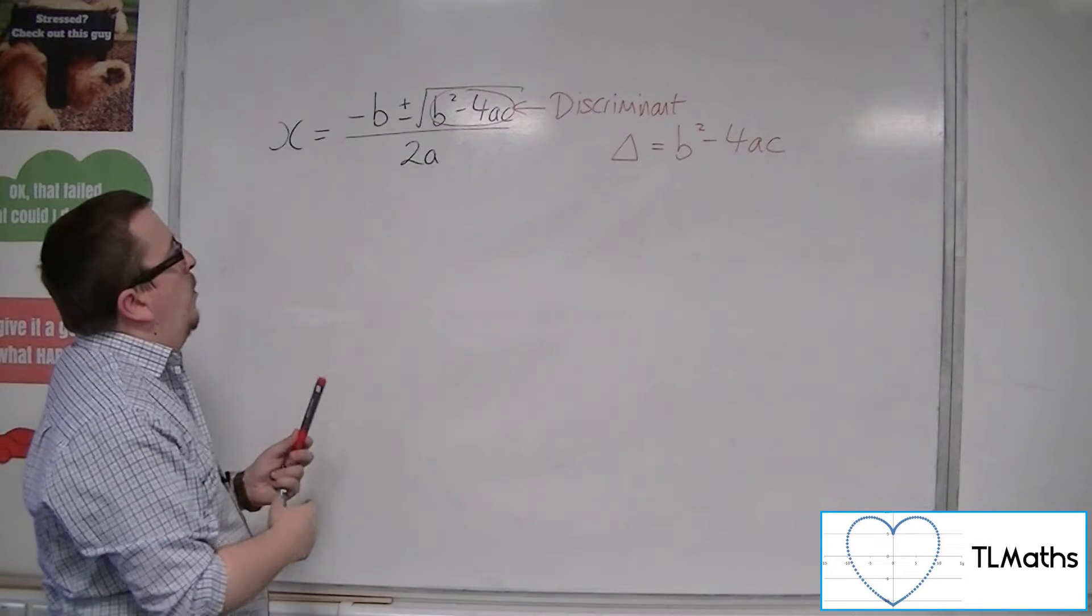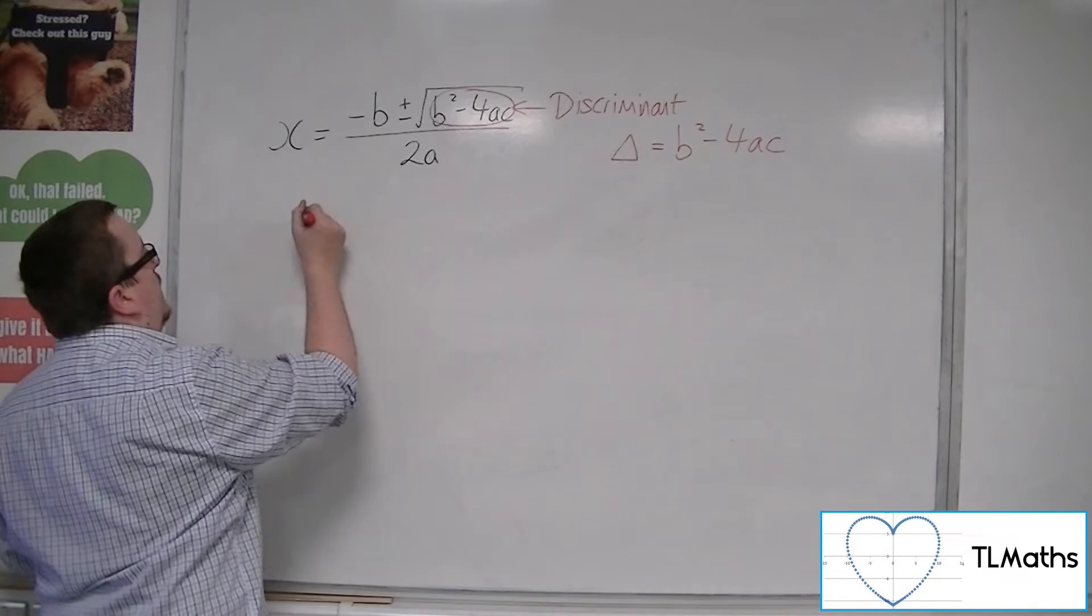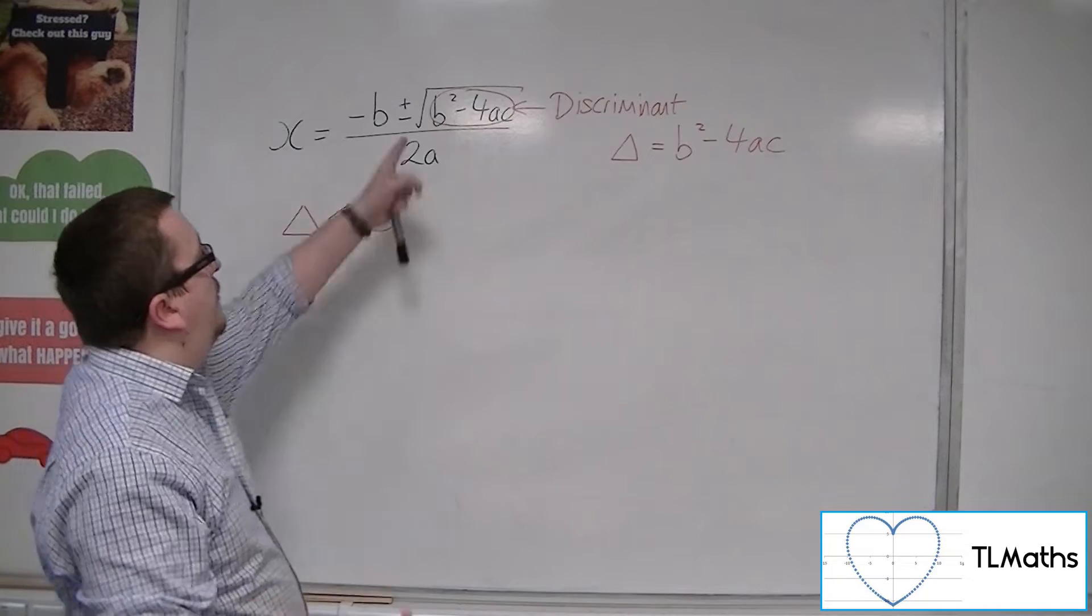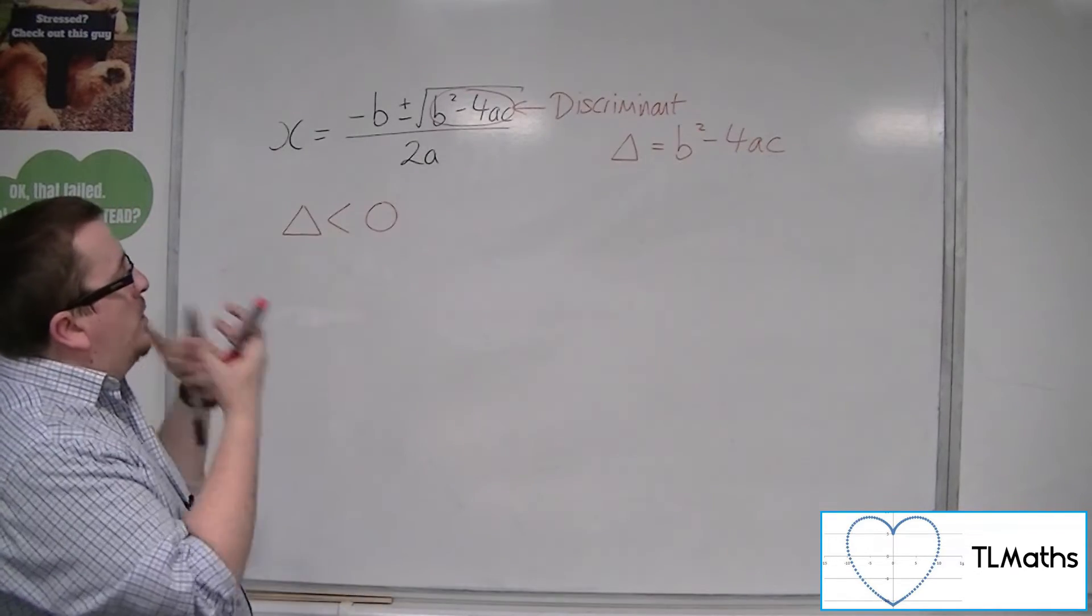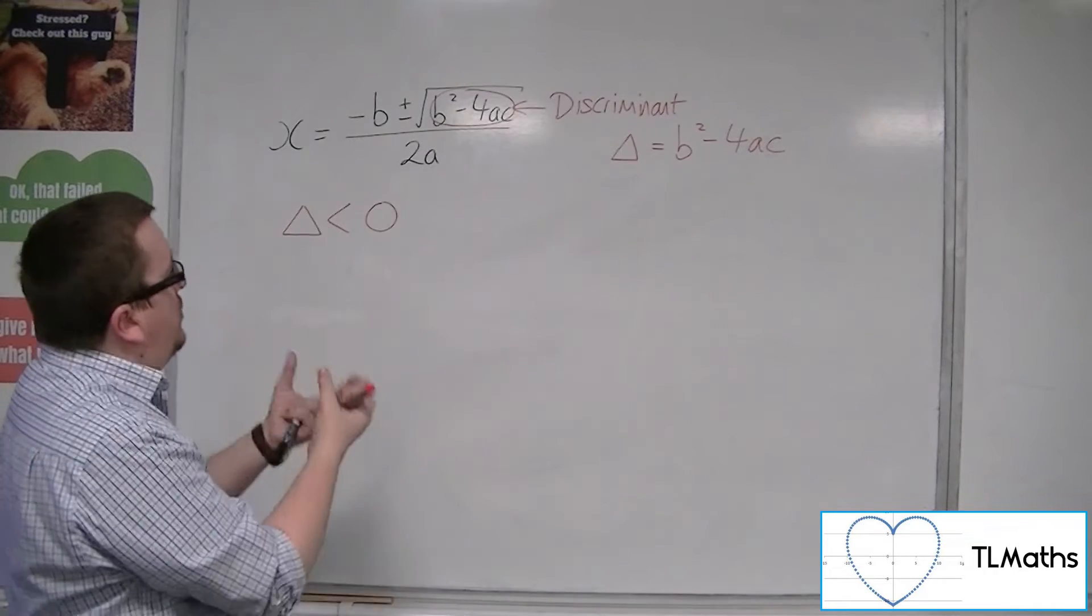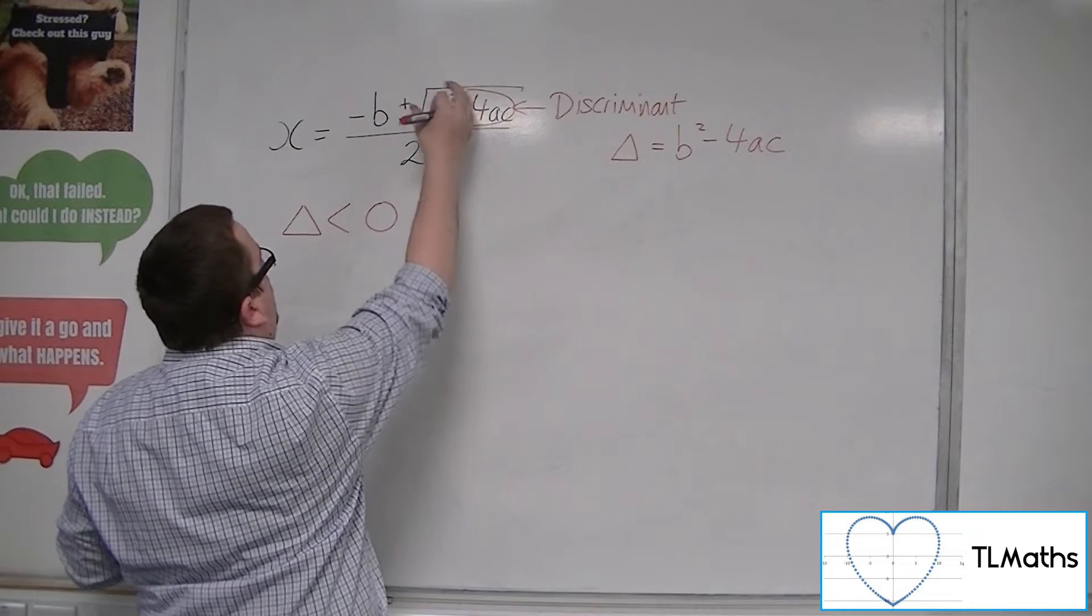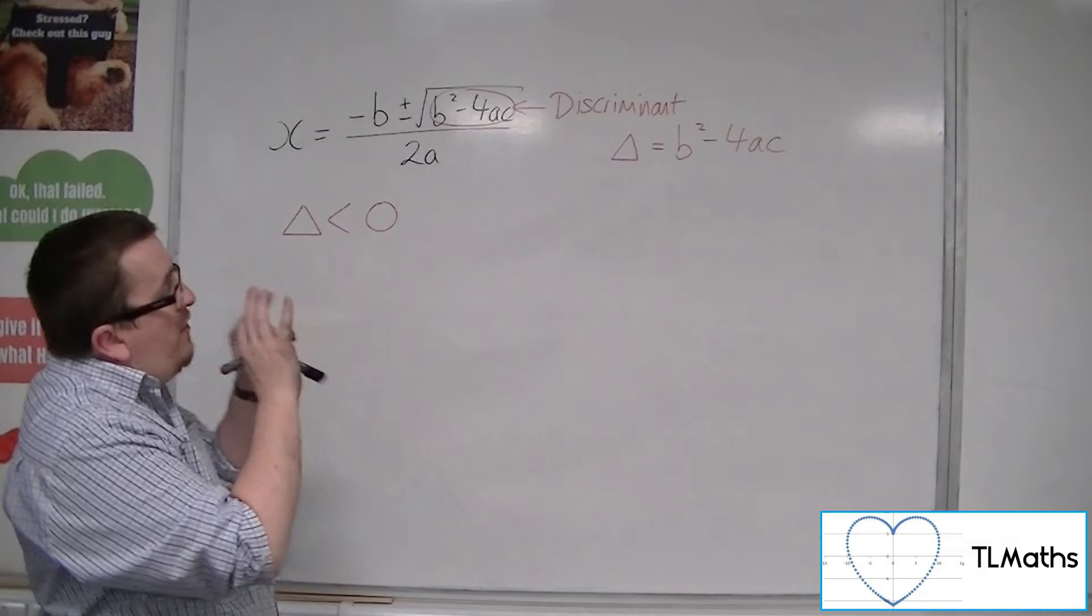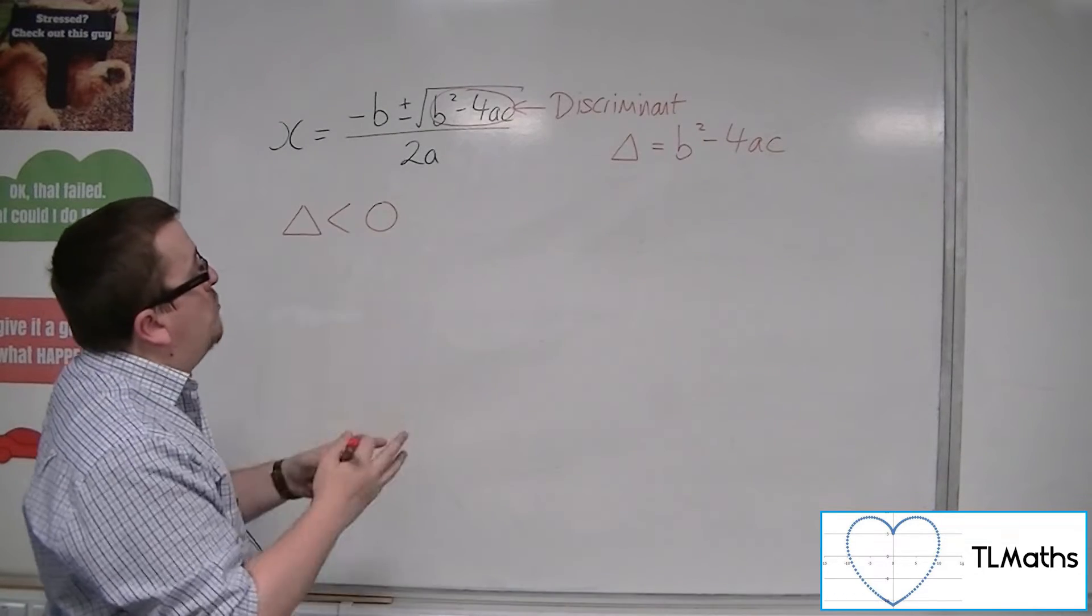Now what's going to happen when that discriminant is negative? So the discriminant is negative, what we're going to have is that the square root does not exist. And if you can't square root, there are no real solutions to square rooting that negative number. So if that part of it doesn't work, then the whole thing doesn't work. And so what that means is that there are no roots, no real roots, to the quadratic equation.